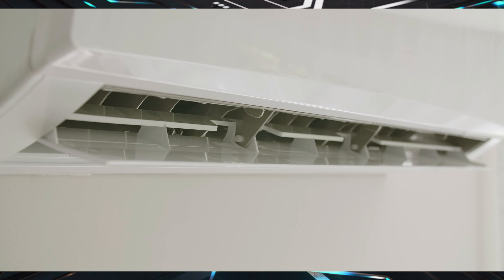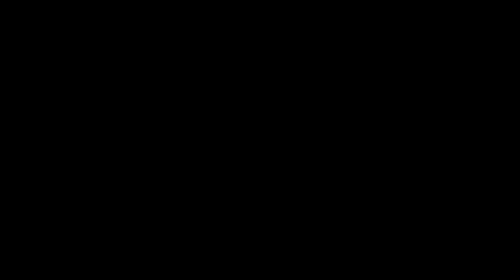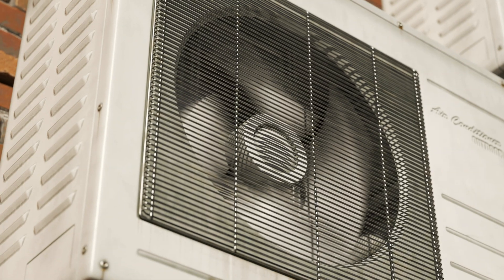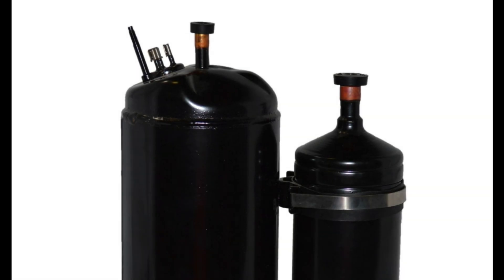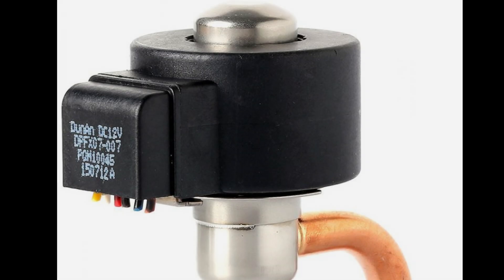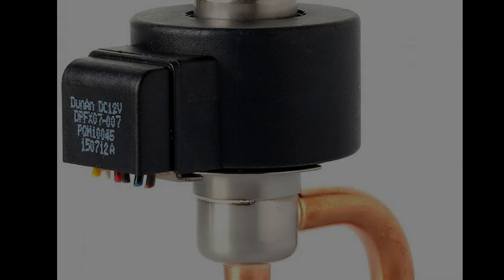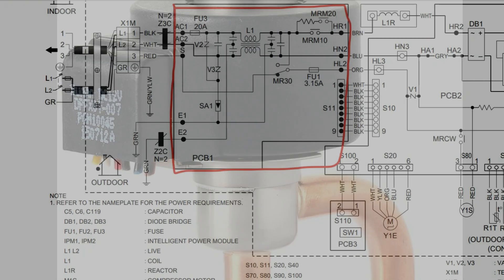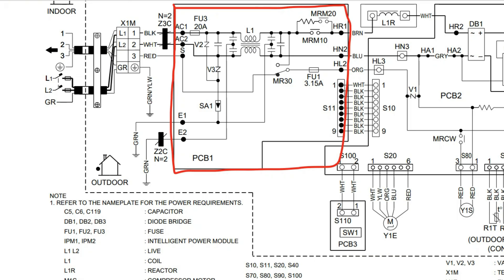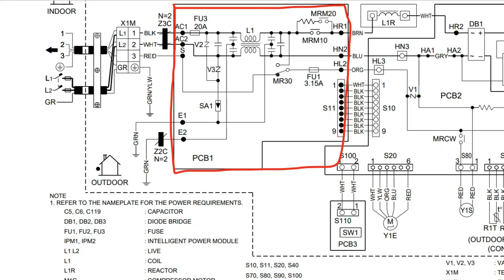It decides what speed the indoor fan motor needs to run, the outdoor fan motor, the compressor, how much the electronic expansion valve should open or close. All this stuff is decided by the PCB.